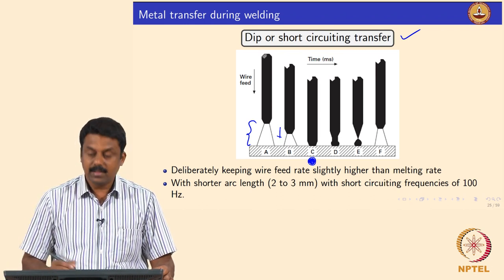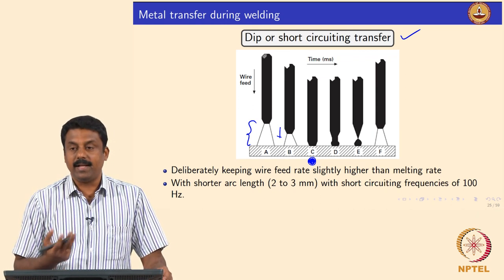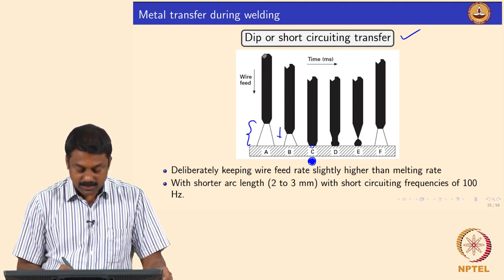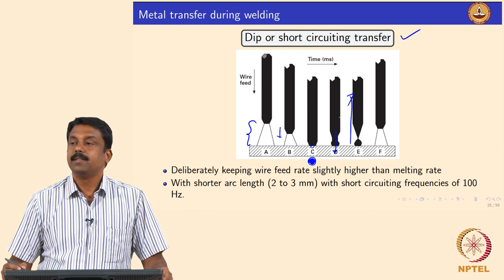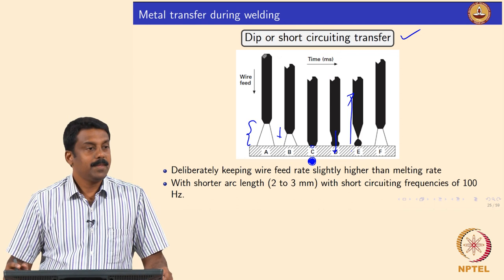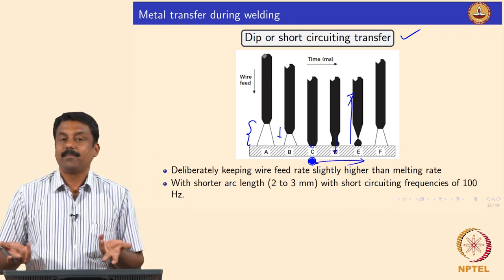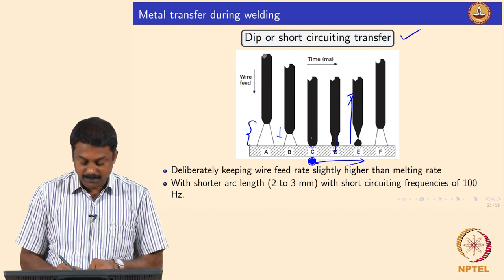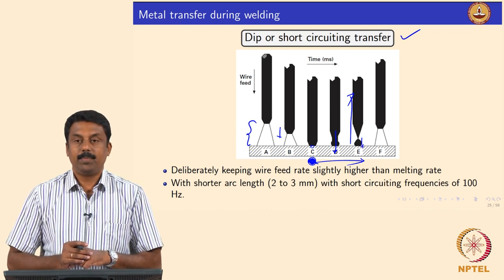Once the short circuiting happens, you also increase the current. So once short circuiting happens, you can transfer the droplet to the workpiece. You form a droplet, then once you are dipping it, you melt the droplet and subsequently pull the wire back. Whatever is molten is detached by the surface tension of the weld pool. During these three steps, the arc is not there. The moment short circuiting happens, the arc is gone. The filler can melt before or during short circuiting, and then you can transfer the droplet by retracting the wire back.